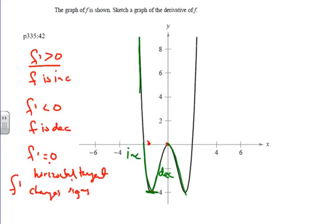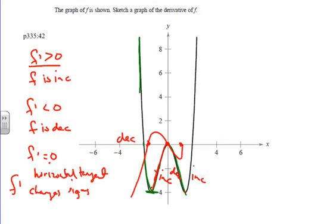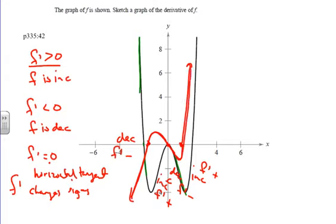Correcting the sketch: we have zeros here, here, and here. This first section is decreasing, so f prime is negative. Then it's increasing, so f prime is positive. Then decreasing again — f prime is negative. Then increasing — f prime is positive. So the derivative graph alternates: negative, positive, negative, positive across those intervals, and that is the sketch of our derivative function.